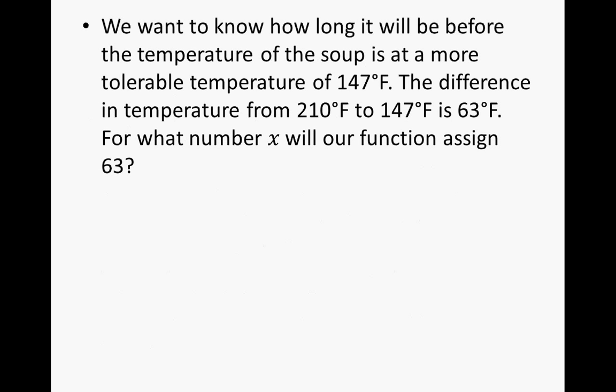We want to know how long it will take before the temperature of the soup is at a more tolerable temperature of 147 degrees Fahrenheit. The difference in temperature from 210 to 147 is 63 degrees Fahrenheit. For what number x will our function assign to 63? Well, if 63 is equal to 7 times x, remembering that it dropped 7 degrees in one minute, then that means x is 9. Our function assigns 63 degrees to 9 minutes.